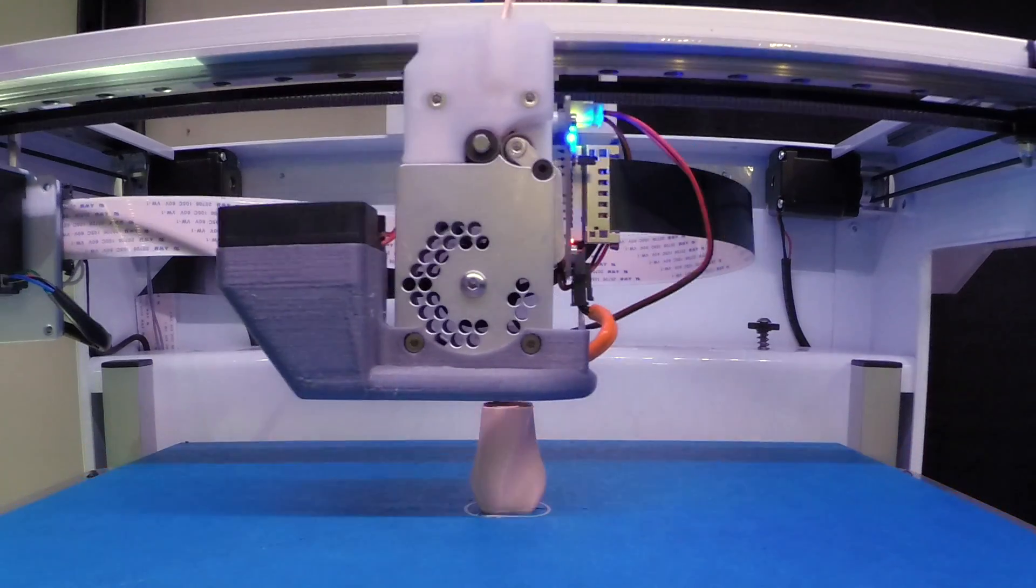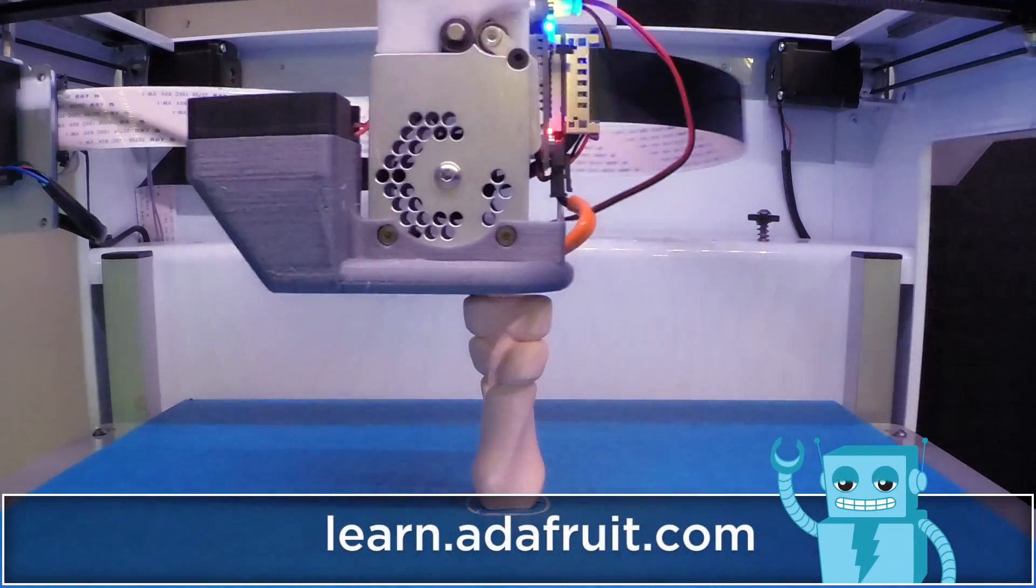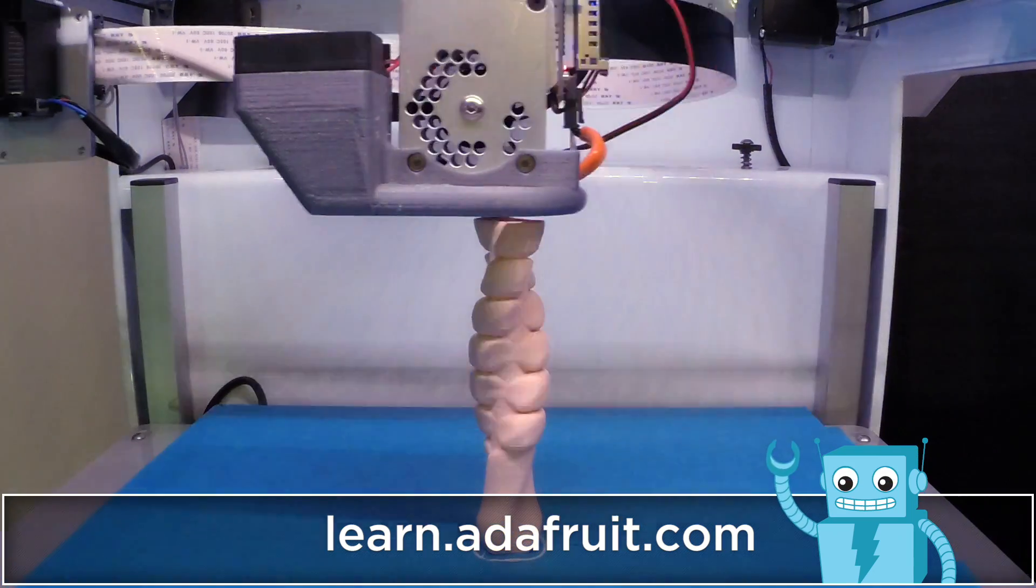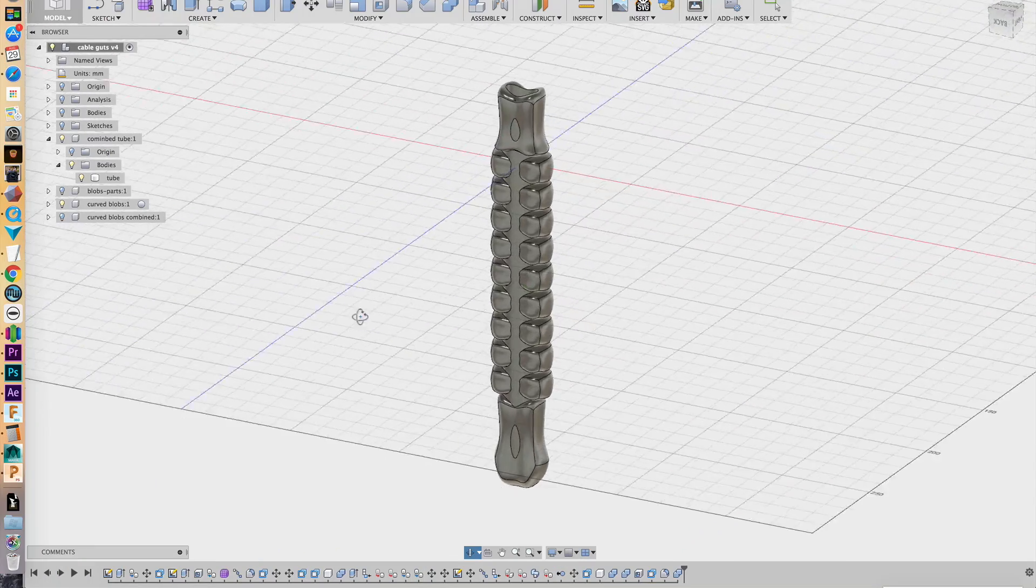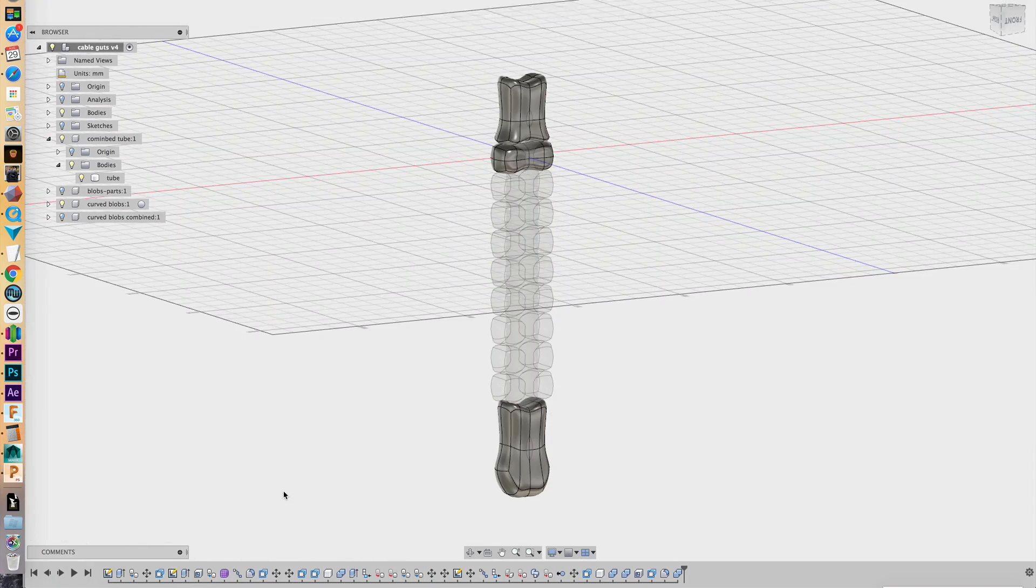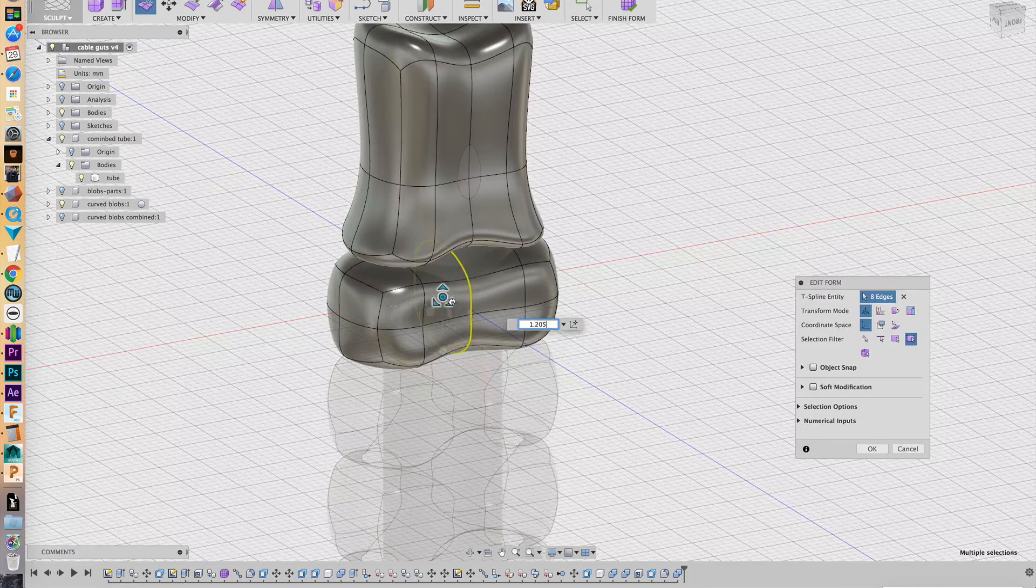We 3D printed the parts in flesh tone colored Ninjaflex with a 0% infill. For slicing settings and a full tutorial on this project, be sure to check out our learning guide linked below. We sculpted the parts in Fusion 360 using T-splines with the freeform modeling tools.